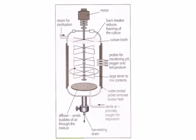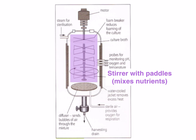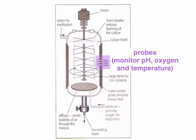Let's look at the different parts of the fermenter — label these in your notes. The first part is the stirrer with paddles. These keep the microorganisms suspended and ensure they have access to nutrients and oxygen. Then there are probes, which monitor pH, oxygen, and temperature.